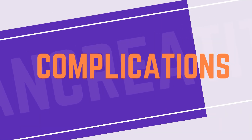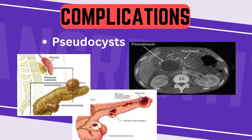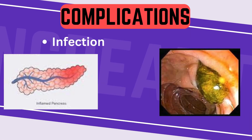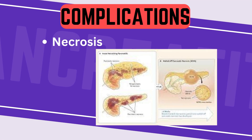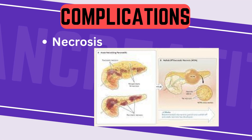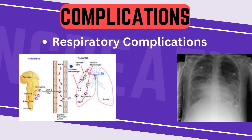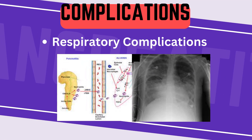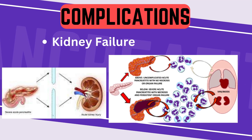Complications of pancreatitis include: 1. Pseudocyst, formed by accumulation of fluid, debris, and tissue around the pancreas — these cysts can cause abdominal pain and may become infected. 2. Infection — the inflamed pancreas is susceptible to bacterial infection, which can lead to more severe complications and systemic illness. 3. Necrosis — severe inflammation may cause tissue death in the pancreas, leading to the release of enzymes into the bloodstream, potentially causing multi-organ failure. 4. Respiratory complications — severe acute pancreatitis can affect lung function, leading to respiratory distress or failure. 5. Kidney failure — the release of inflammatory substances can affect kidney function, leading to acute kidney injury.